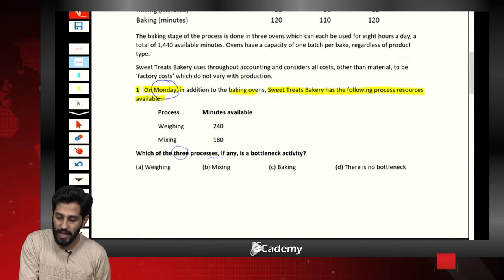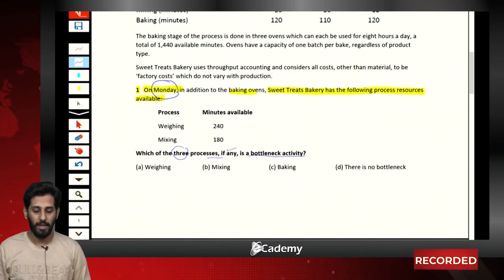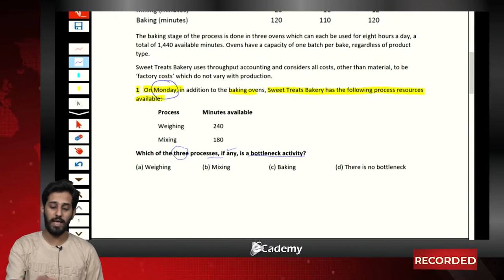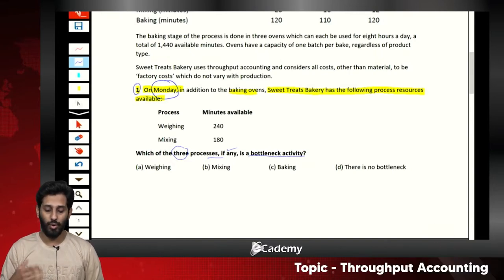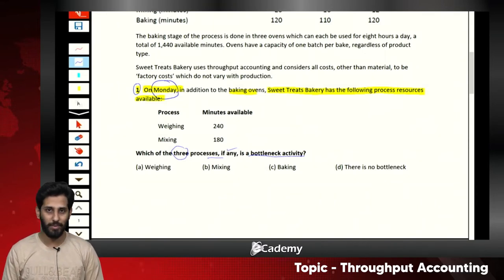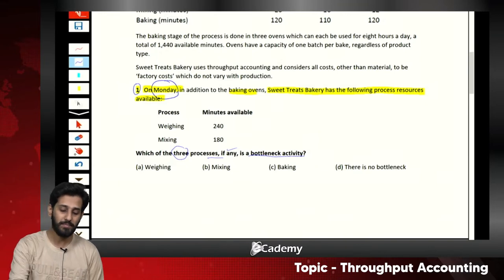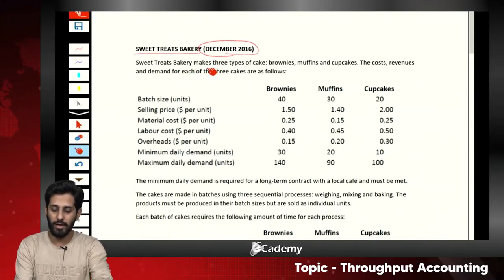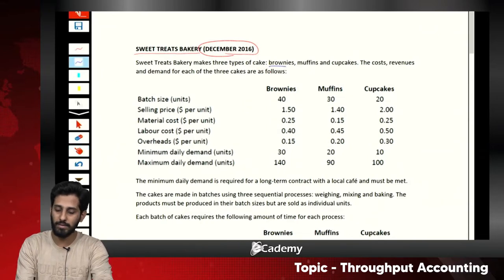Which of the three processes, if any, is a bottleneck activity? The requirement of MCQ one is simply to identify which process is the bottleneck. I assume you have already revised throughput accounting concepts: bottleneck resource, return per hour, and the complete chapter.